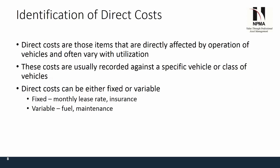Direct costs are those items directly affected by the operation of vehicles and often vary with utilization. The direct cost is something you can put to a specific vehicle. For example, if you have a bulk oil supply in a garage and you have a means of measuring that oil as it's going into a particular vehicle, then it's a direct cost. However, if you do not have a means of tracking that, then it becomes an indirect cost.